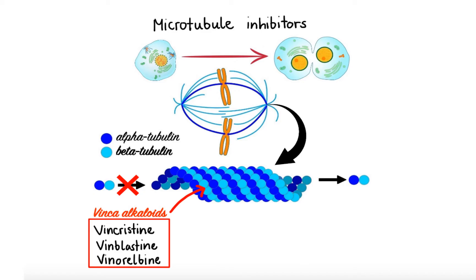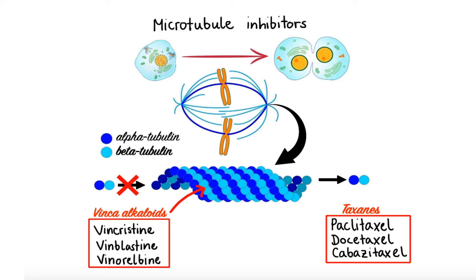In contrast, the second group of inhibitors, which include taxane drugs such as paclitaxel, docetaxel, and cabazitaxel, promote stabilization of the microtubule by binding to their own distinct sites on the beta subunit located in the inner site of the microtubule lumen, thereby inhibiting tubulin depolymerization, resulting in large, stable, and dysfunctional microtubules. Without properly functioning microtubules, chromosomes cannot align and divide, which leads to cell cycle arrest at M phase and apoptosis.